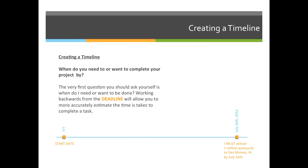Once you have a list of all the things you'll have to complete, you can create a timeline. The very first thing you should do when creating a timeline is ask: when do I want or need to be done with this project? Working backwards from a deadline allows you to know the very last day you can start a project. For example, if you're changing the oil in your car and want to be done by 2 o'clock, you can determine you have to start by 12:15.